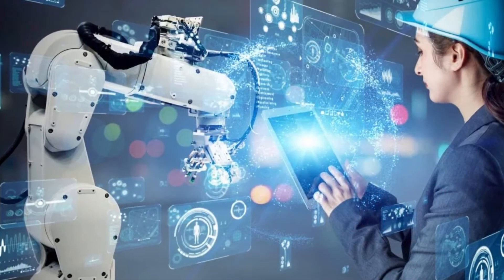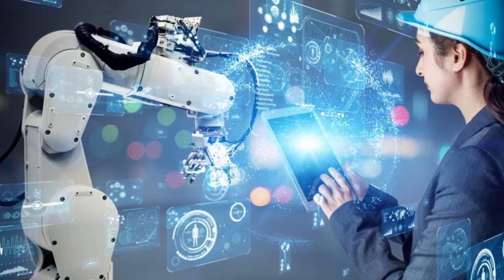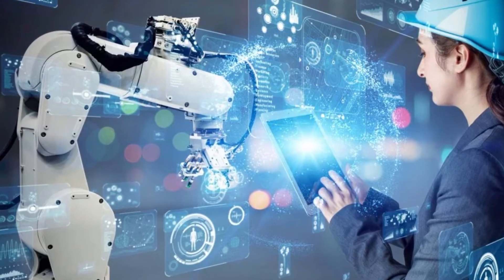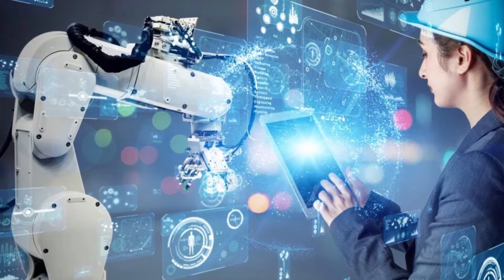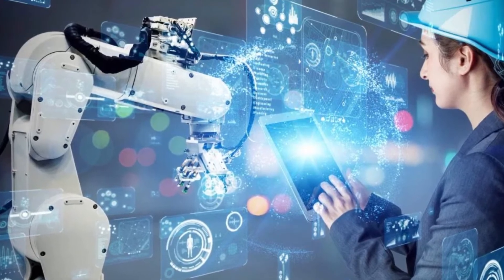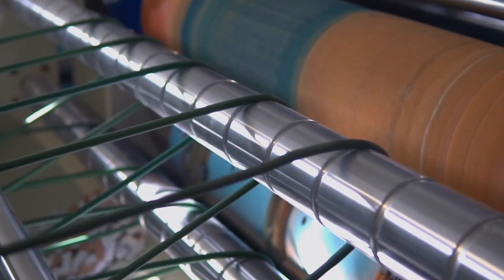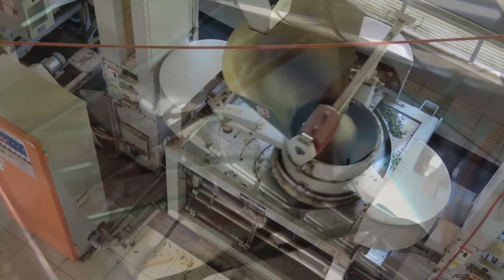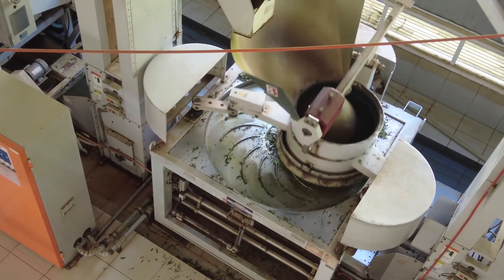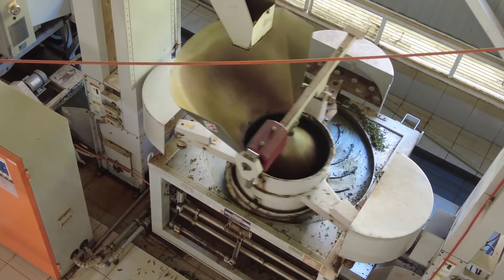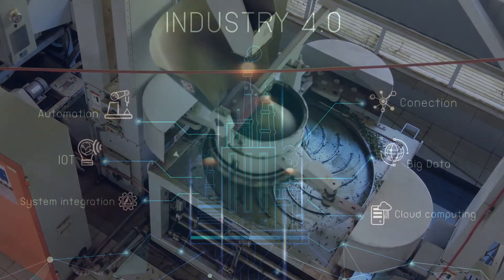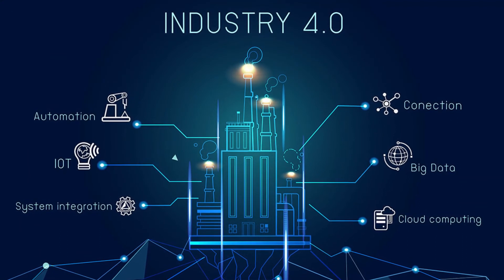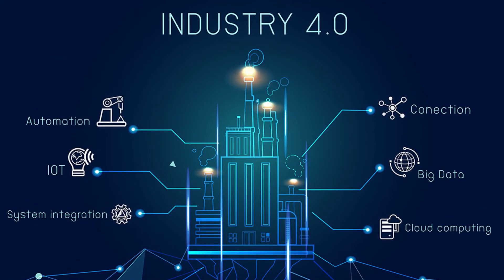Industry 4.0 and 5.0 have created a roadmap for enterprises to follow to thrive. We know that Industry 5.0 is relatively new with new additions. Robots are already a fixture in the manufacturing industry, and Industry 4.0 technologies enable greater flexibility in manufacturing processes. Human creativity and craftsmanship are combined with robot speed, productivity, and consistency in Industry 5.0. That's all there is to it in a nutshell — this is where it differs from Industry 4.0.